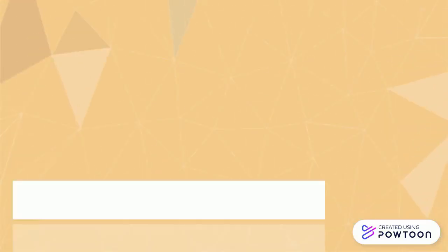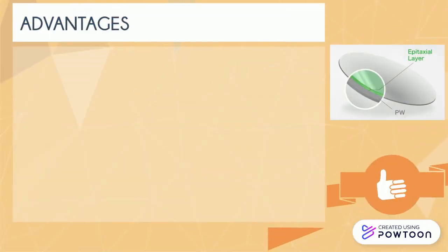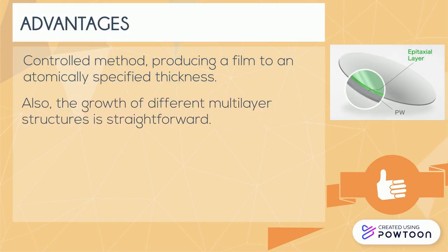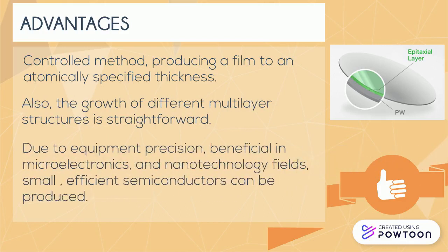The advantages of using vapor phase epitaxy are that it is a controlled method producing a film to an atomically specified thickness. Also, the growth of different material structures is straightforward. Due to equipment precision, it is beneficial in electronics and nanotechnology fields, and more efficient semiconductors can be produced.